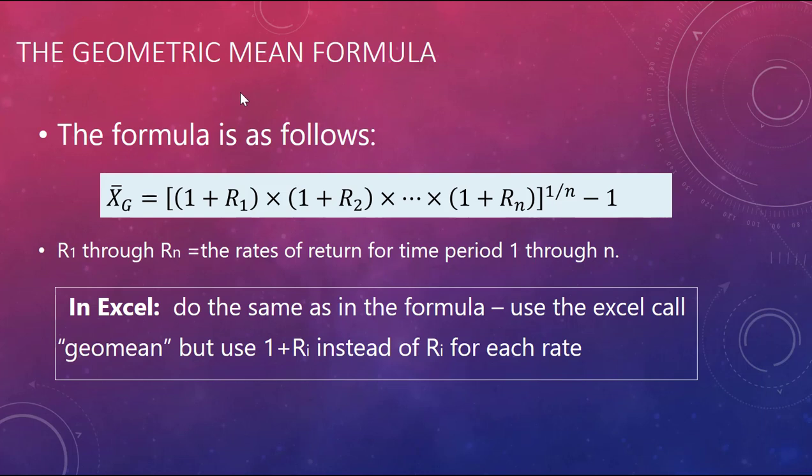Okay, here is the formula for it. It looks quite complicated. It's not too bad, especially there's a great Excel call for it. So here it is: 1 plus R1, 1 plus R2, 1 plus Rn. What do those mean?